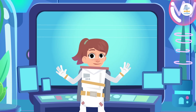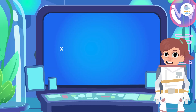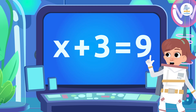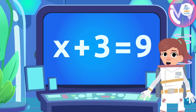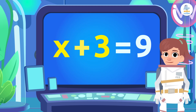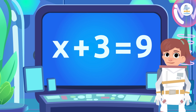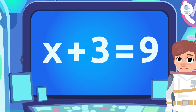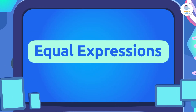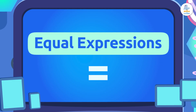What is an equation? An equation is a mathematical statement that shows that two expressions are equal. There is one expression on the left and one on the right, with an equal sign in the middle. The two equal expressions have the same value. That is why there is an equal sign.